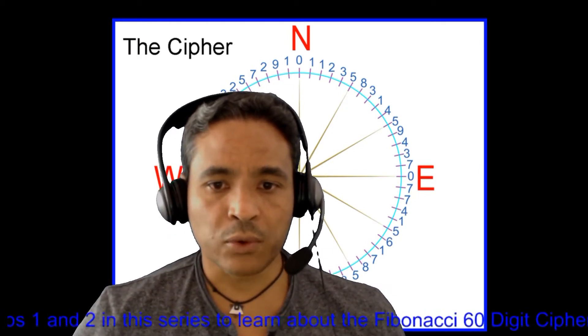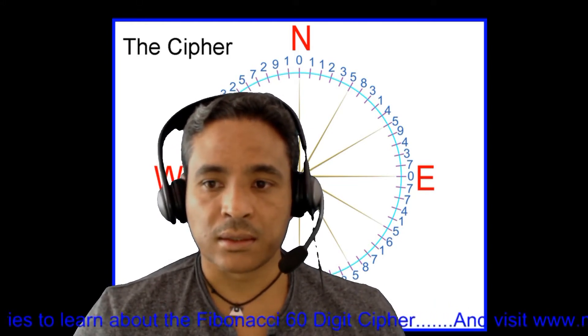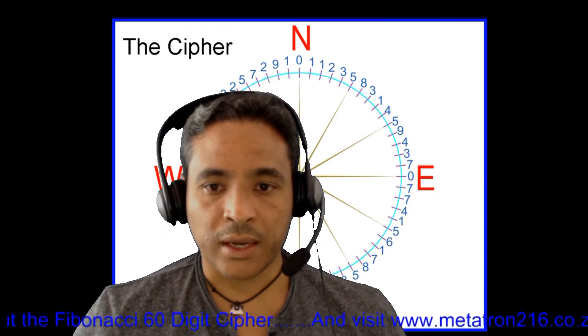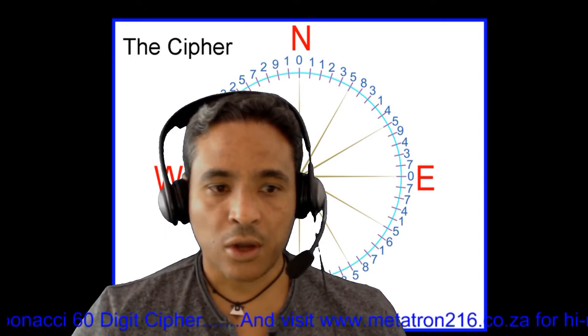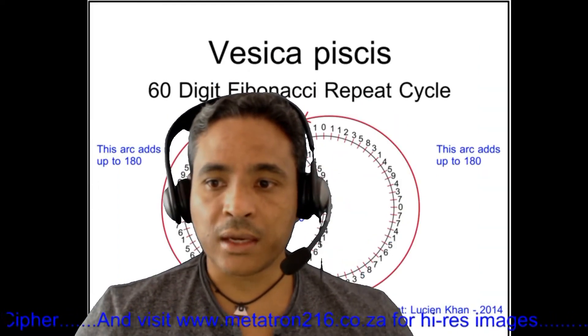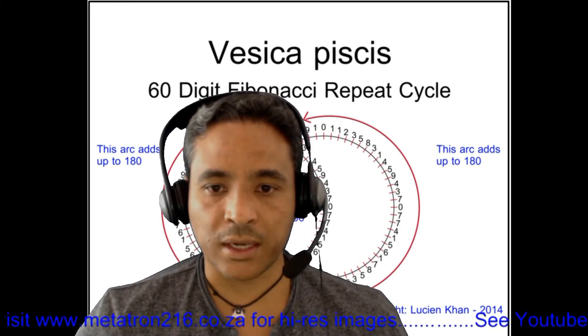In video 1, we saw the cipher that was revealed by the Fibonacci 60 digit repeat pattern. In video 2, I created a Venn diagram, commonly known as the Vesica Pisces. And incredibly, the 60 digit cipher started to produce the number 360.